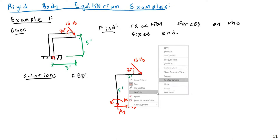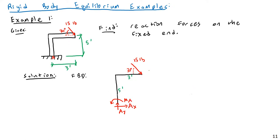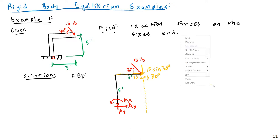I want to break the applied force down into components. The vertical component is 15 times the sine of 30 degrees, and the horizontal component is 15 times the cosine of 30 degrees. The vertical component's line of action gives a 3-foot moment arm, and the horizontal component has a 5-foot moment arm.